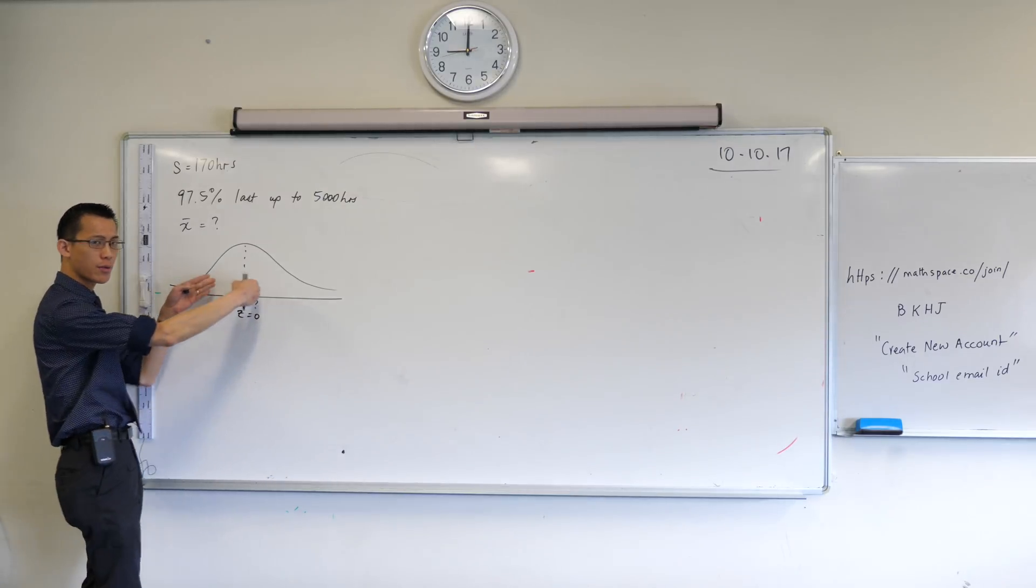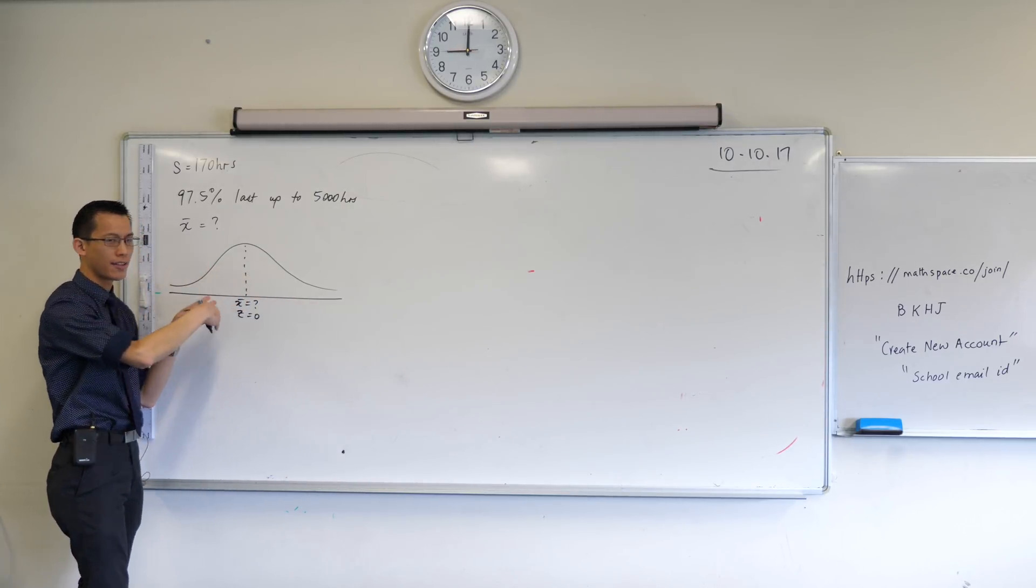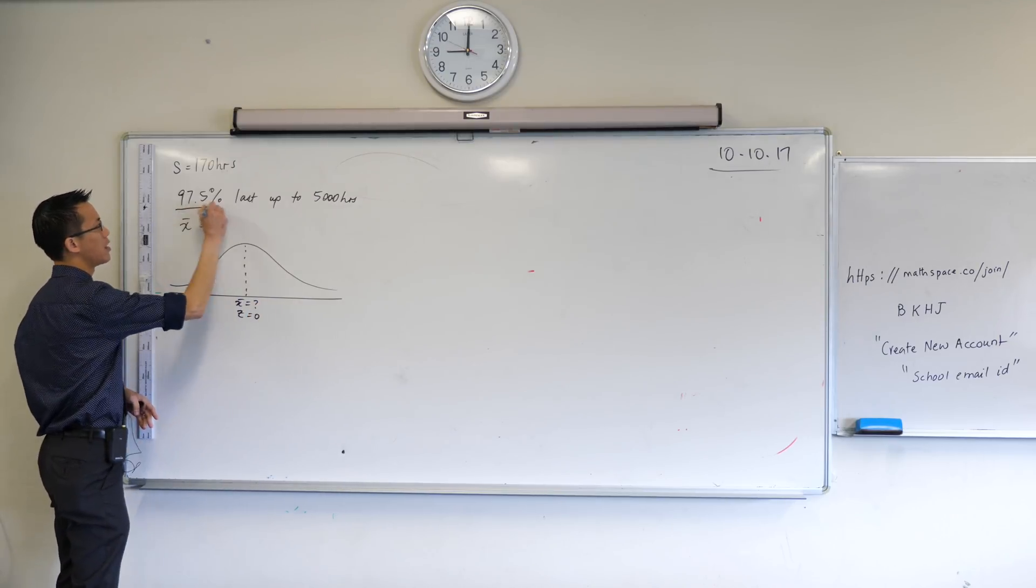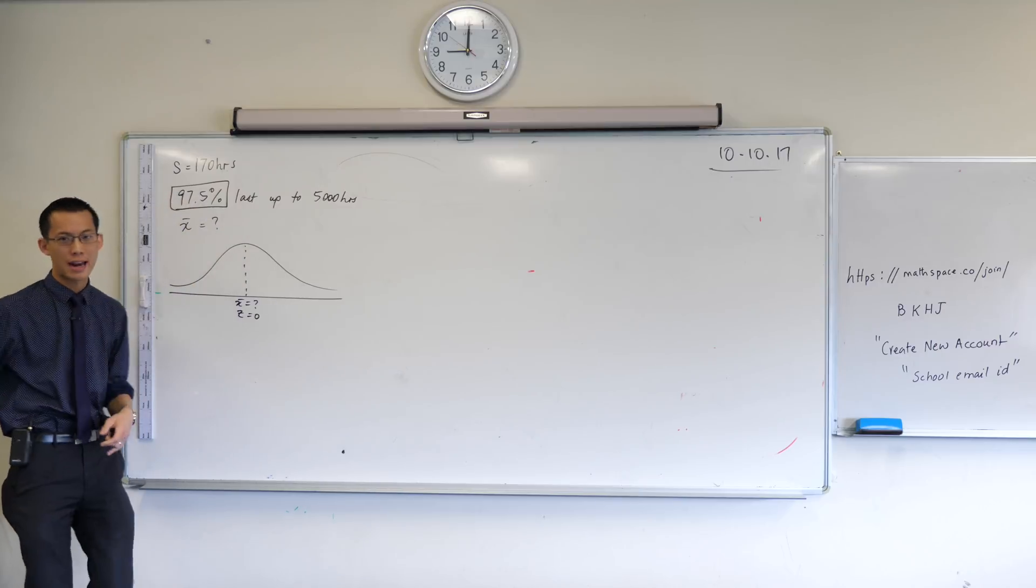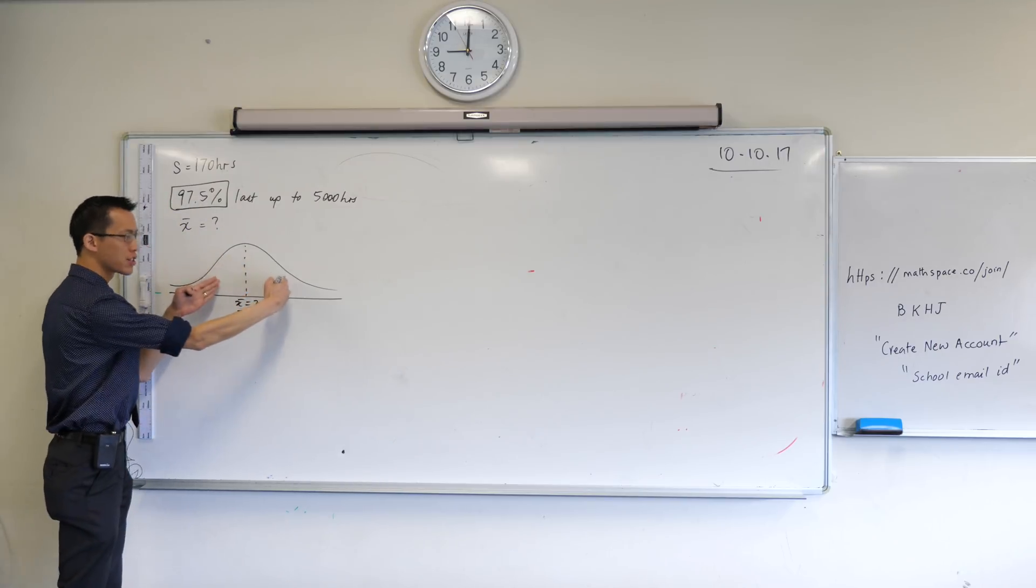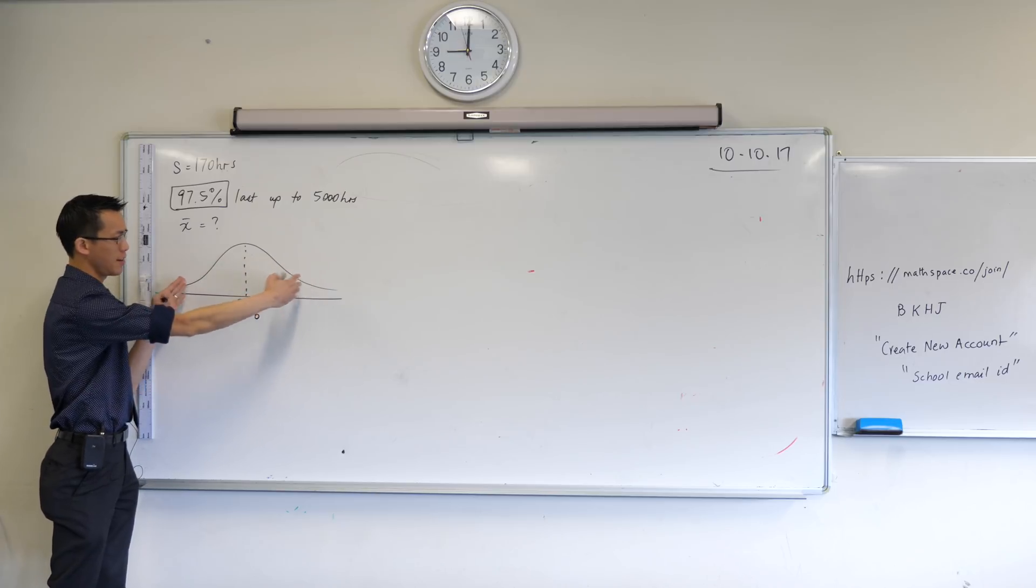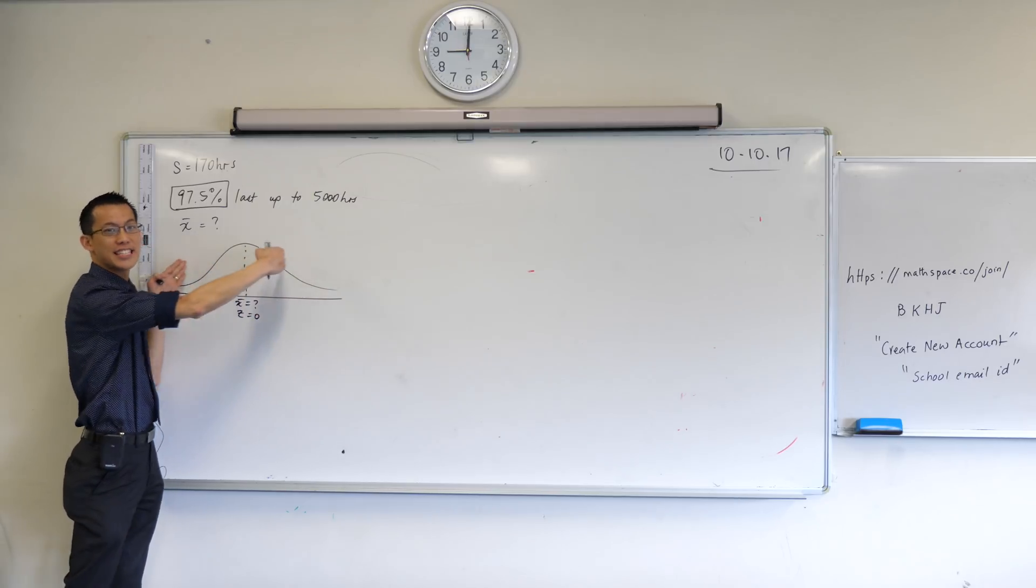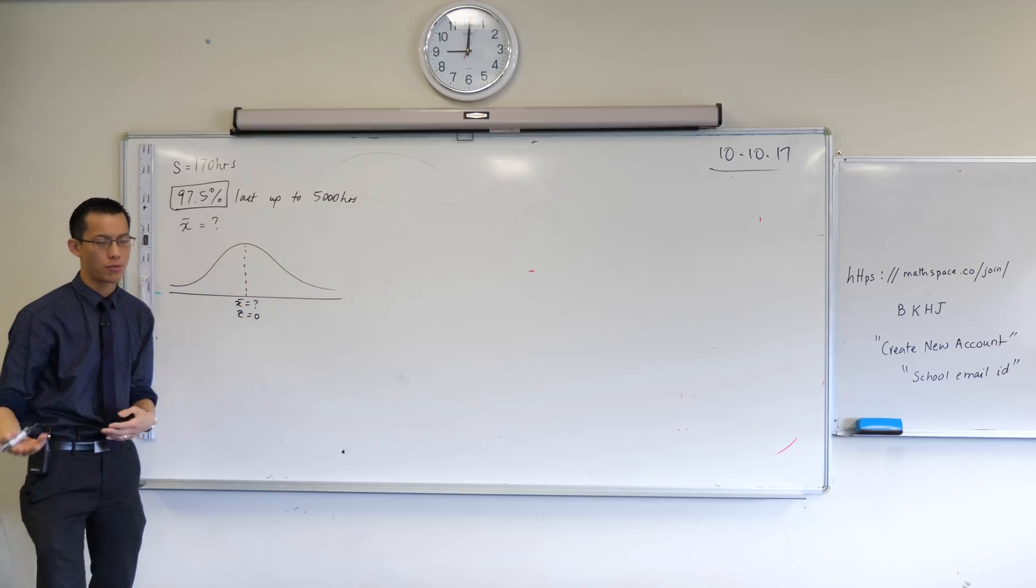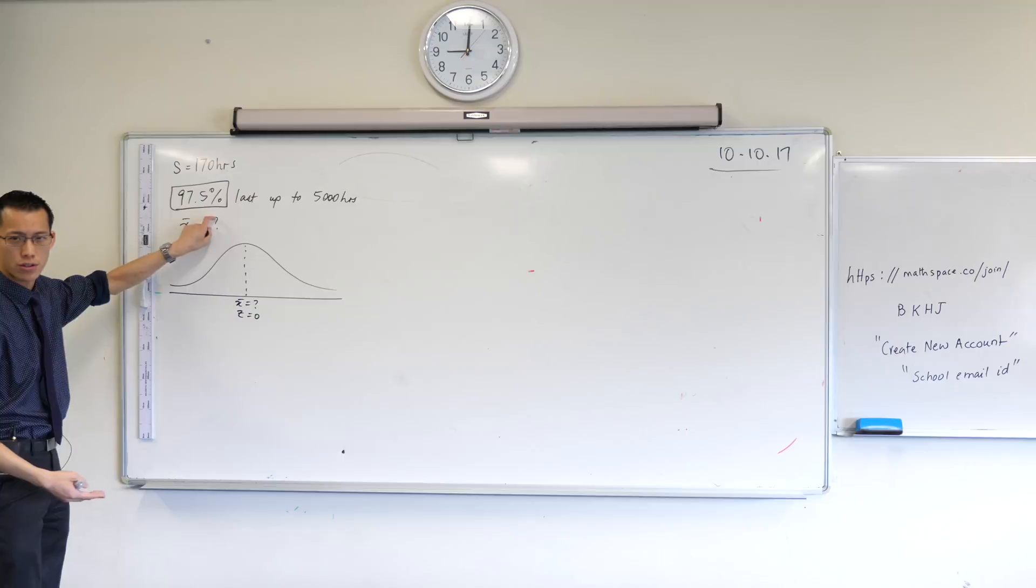As I go further and further out, I get different proportions of this population. The reason that's important is because this critical piece of information, 97.5%, must be linked to how much of this population am I capturing based on how many standard deviations I am from the mean, which is another way of saying what z-scores will give me this proportion.